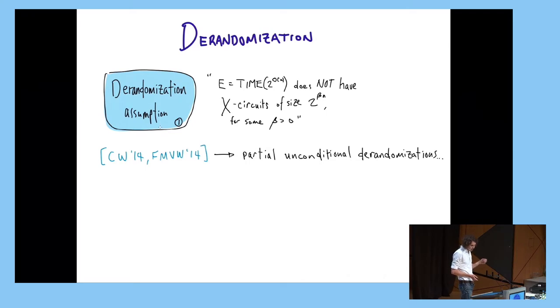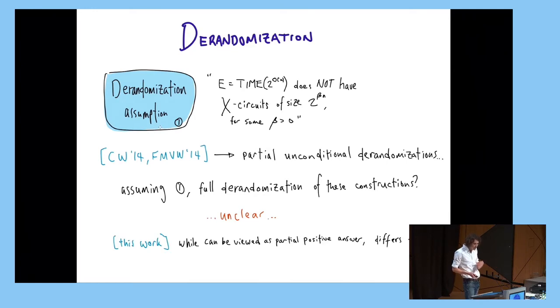Before we continue, I'd like to say, this prior non-malleable codes that I was just discussing, we can view as partial derandomizations of a randomized construction. And they imply, if you want an explicit code, you need circuit lower bounds. So, if we assume circuit lower bounds, then can we hope to make progress? Unfortunately, we don't know. The case of derandomizing these randomized code constructions is very different from derandomizing languages, at least to our knowledge. This work, you could view it as a partially positive answer, but I'd like to reiterate that it's very different in that we're considering uniform tampering functions. And it's also different from the prior work in that our guarantees are computational and non-negligible.